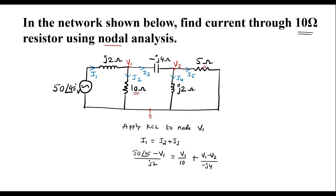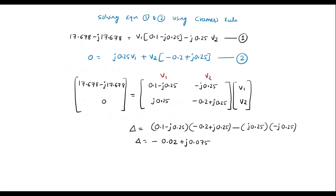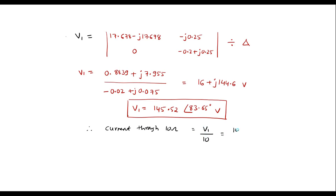Since we need to find the current through the 10 ohm resistor, which is I2, and I2 = V1/10, we don't need to find V2. Therefore, current through the 10 ohm resistor = V1/10 = 145.52∠83.65° / 10 = 14.552∠83.65° amperes. This is the required result. Thank you for watching.